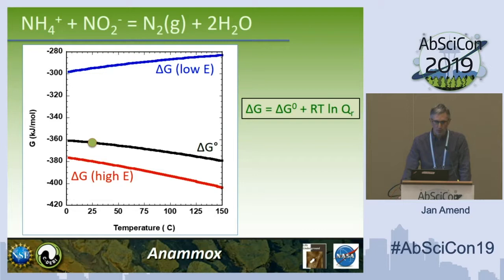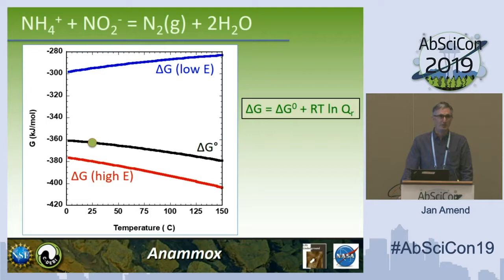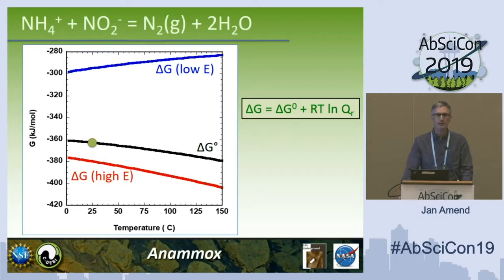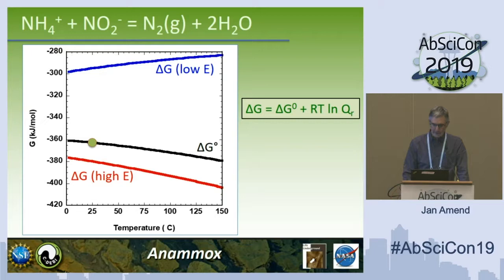I've got a low energy and a high energy example here. The low energy example — that blue curve — means very low concentrations of ammonium, very low concentrations of nitrite, all the things on the left-hand side, and high concentrations of the product, like 0.78 bars of nitrogen, like atmospheric. A high energy example would be the opposite: high ammonium, high nitrite, low N2 content. These are geochemically reasonable concentrations. The point is there's a temperature dependence, and there can be quite a big dependence on energetics coming from the chemical environment.